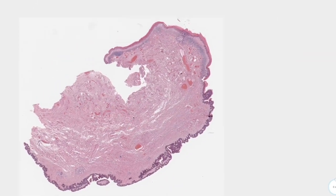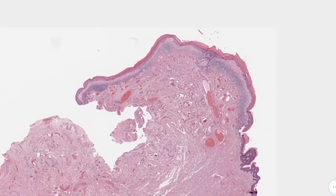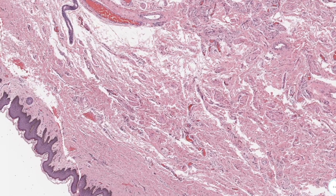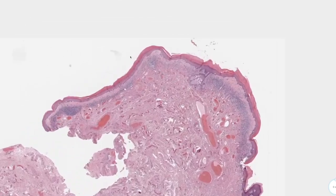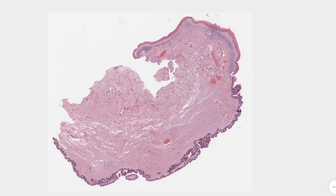Going back to low power, in the affected area, the rete pegs are conspicuously absent, meaning the epidermis here is atrophic. Another finding is that the keratin layer is much thicker in the affected part compared to the normal area — this is hyperkeratosis, a very thick layer of keratin.